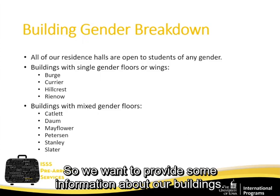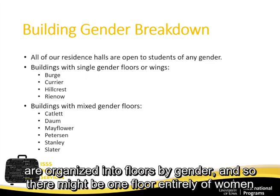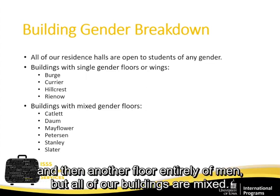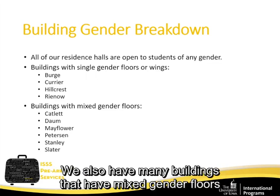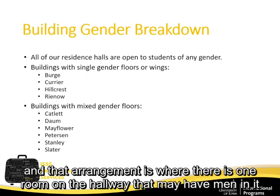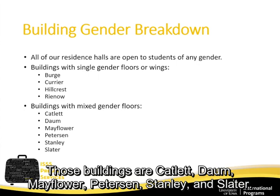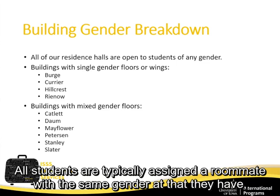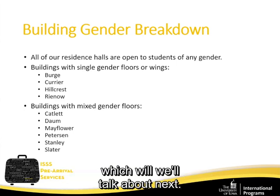Our residence halls are open to students of any gender. Some buildings are organized with single-gender floors or wings — those buildings are Burge, Courier, Hillcrest, and Reno Halls. Many buildings have mixed-gender floors, where rooms on the same hallway may have different genders — those buildings are Catlett, DOM, Mayflower, Peterson, Stanley, and Slater. All students are typically assigned a roommate of the same gender, and all buildings provide privacy in using the restroom, whether in community-style or single-user restrooms.